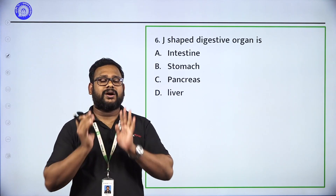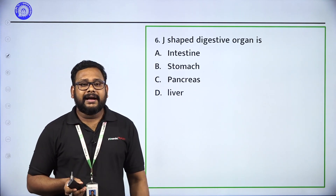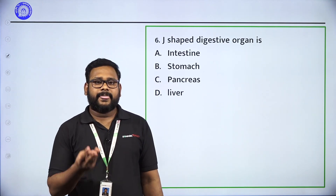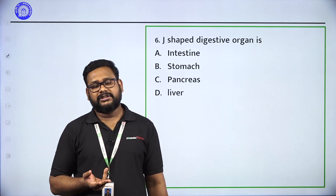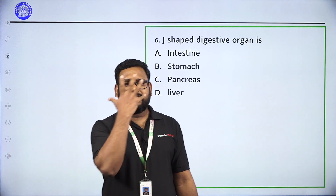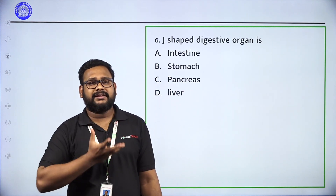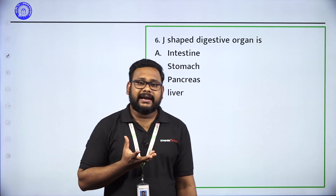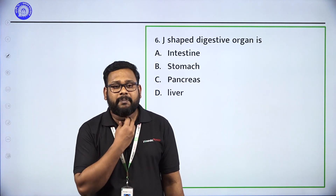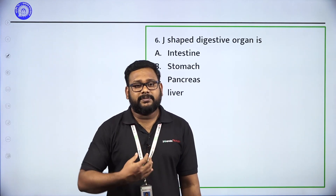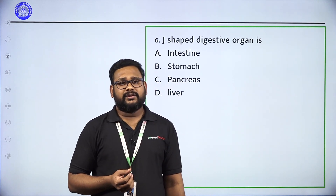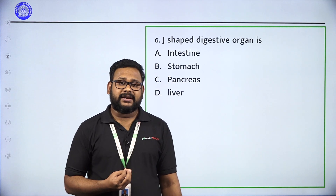In the mouth, you will say buccal cavity. The buccal cavity contains the tongue and teeth. This is the buccal cavity. Then comes the esophagus — that is 20 cm. The J-shaped digestive organ is the stomach.